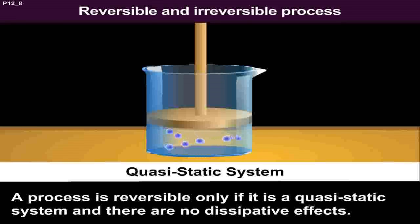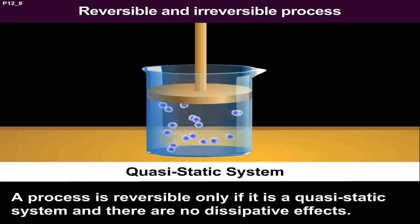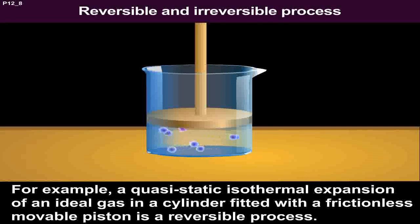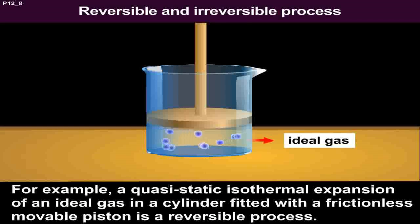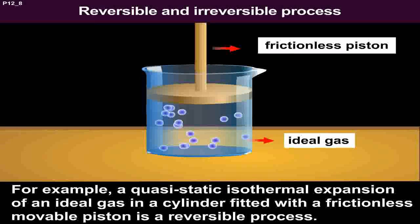A process is reversible only if it is a quasi-static system and there are no dissipative effects. For example, a quasi-static isothermal expansion of an ideal gas in a cylinder fitted with a frictionless movable piston is a reversible process.